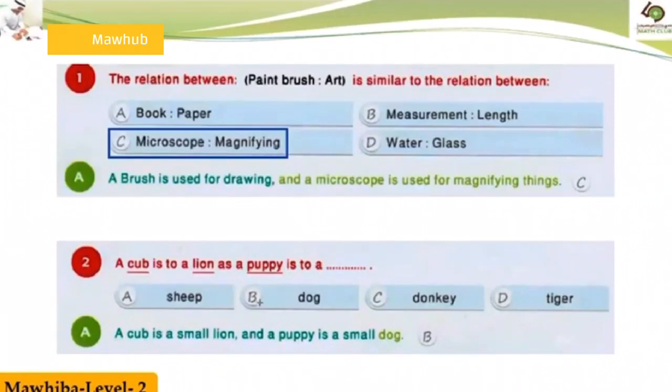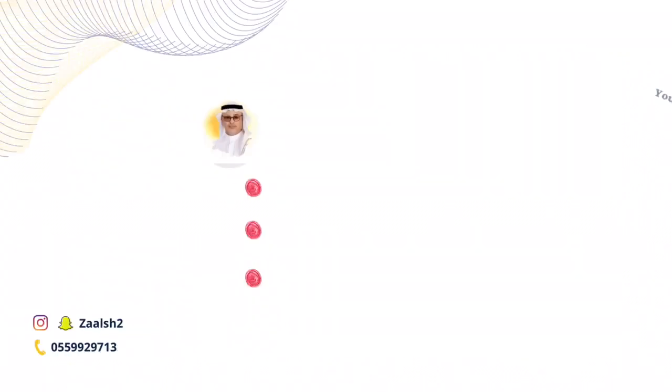Okay, Fatima, go ahead. A cup is to a lain as a puppy is to — it is B, a dog. Because a cup is a small lain and a puppy is a small dog.